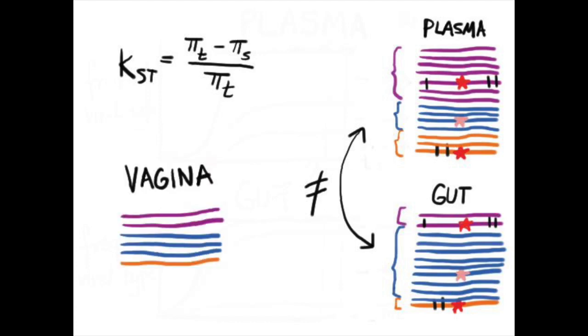In particular, the gut and the vagina often look different from the blood plasma, and also different from each other.